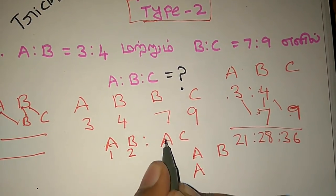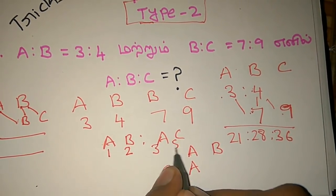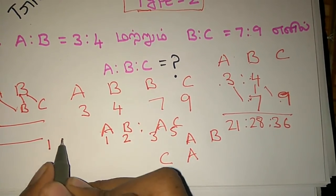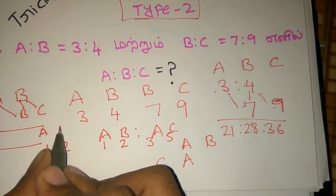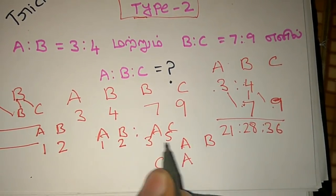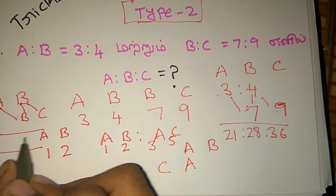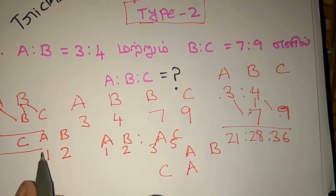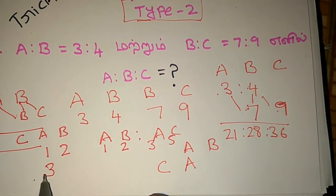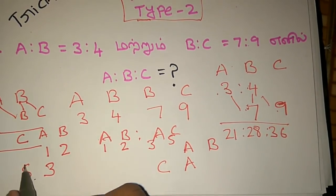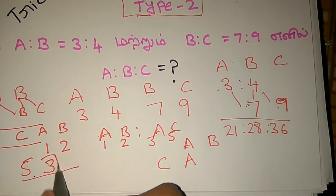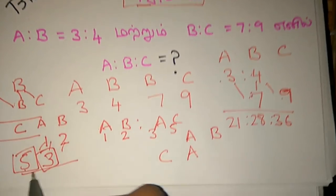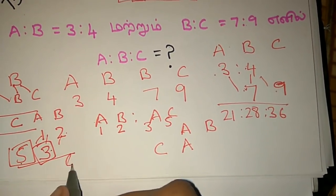AB is 1.2, AC is 3.5. AB and AC — A is 3, C is 5. AB is 3.5.